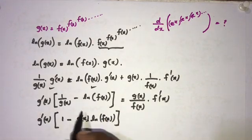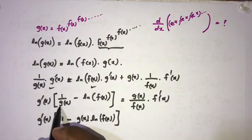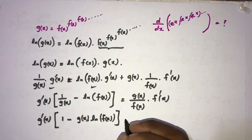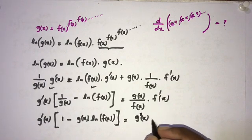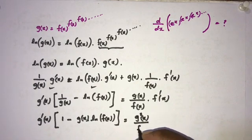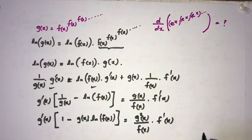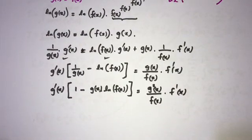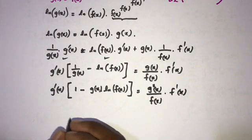In the denominator we have g of x, and the factor is one minus g of x times natural log of f of x. Now I'm going to multiply through by g of x, so on the right-hand side we have g of x over f of x times f'(x). Now we can isolate g'(x).